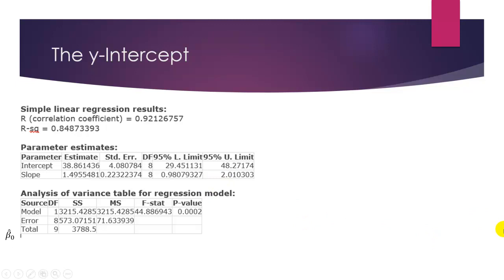The first number is the number next to intercept, and some statistical software packages call this constant instead. This number is 38.86, et cetera, in the sample, and that's going to be our estimate for our y-intercept or just our beta-naught-hat.